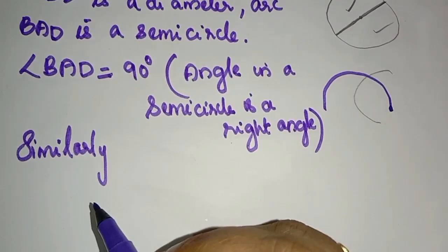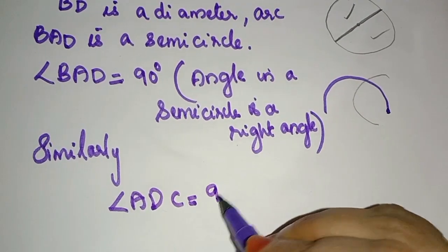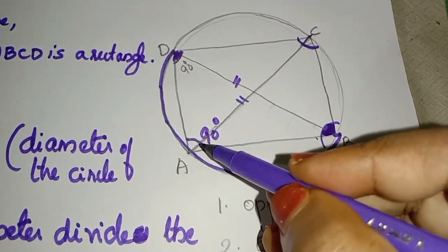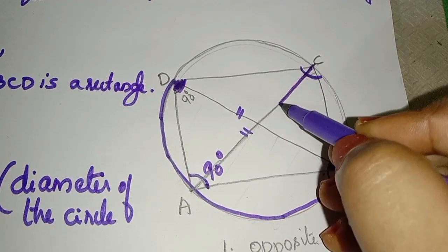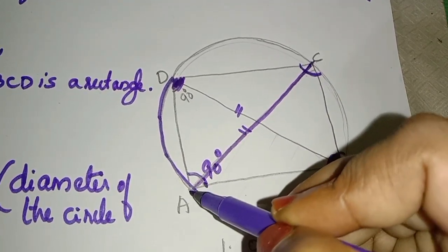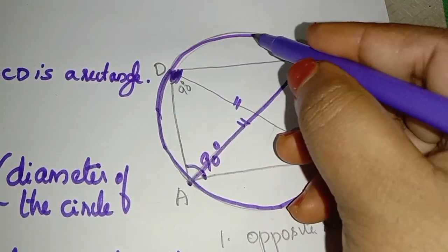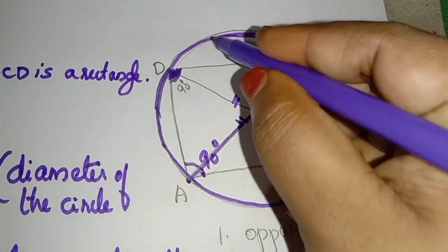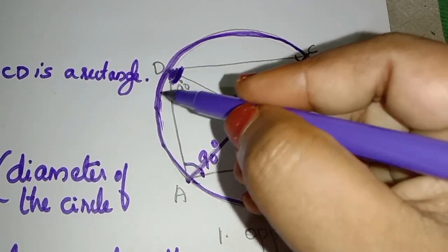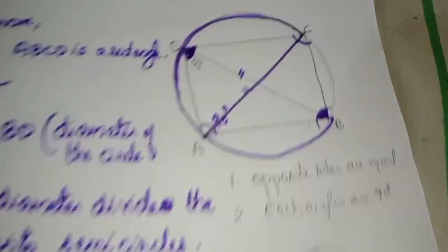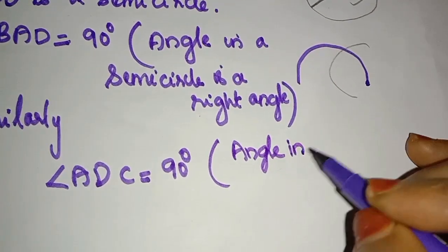Similarly, angle ADC is 90 degrees. The angle in the semicircle means the angle equals 90 degrees because of the diameter. The angle is 90 degrees; reason: angle in a semicircle.